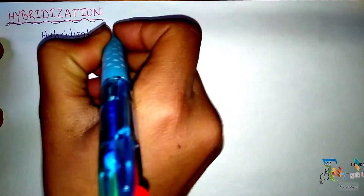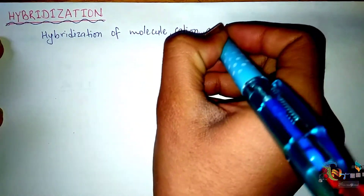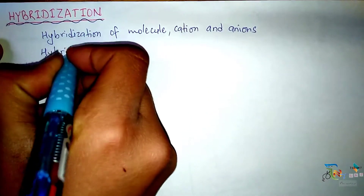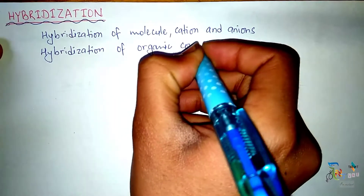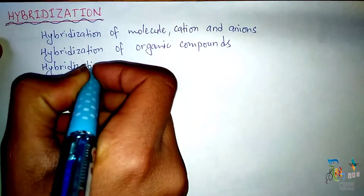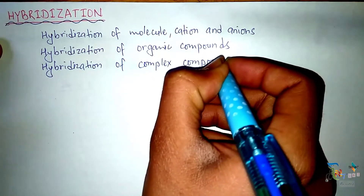Welcome to TNT PKT. Today's topic is hybridization. I will be discussing three different types of hybridization: first, hybridization of molecules, cations, and anions; secondly, hybridization of organic compounds; and finally, hybridization of complex compounds.